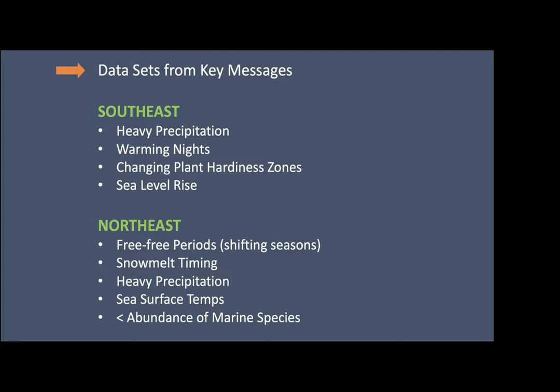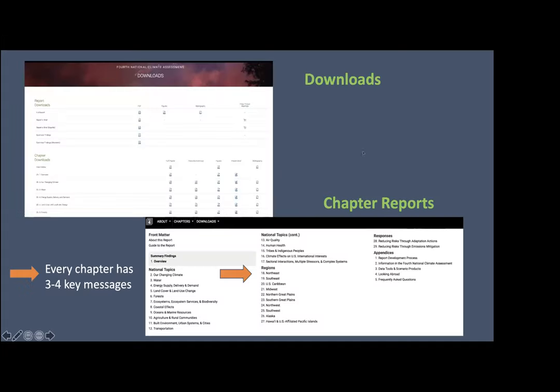For the southeast, the key messages are heavy precipitation, warming nights, a change in plant hardiness zones, and sea level rise. For the northeast: more frost-free periods, shifting seasons, snow melt timing, heavy precipitation, and sea surface temperatures. There's also a focus on the lessening abundance of marine species, particularly fishery species. On the downloads page, you can easily download specific information by chapter, find your region, and also find national topics whether you're interested in coastal effects, forests, human health, and more.